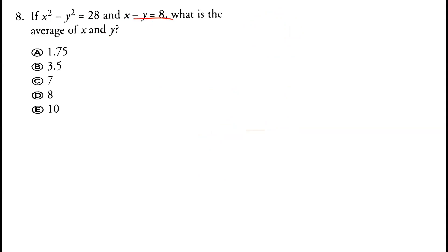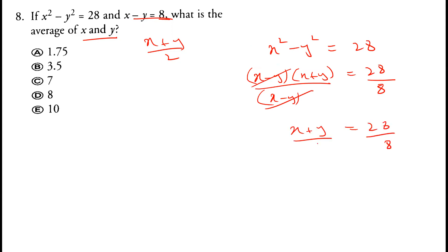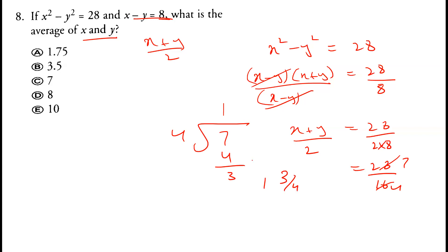If x squared minus y squared equals 28 and x minus y equals 8, what is the average of x and y? We write x squared minus y squared as (x minus y)(x plus y) equals 28. Dividing by x minus y which is 8, x plus y equals 28 over 8. Dividing by 2, the average is 28 over 16, which is 7 over 4, or 1.75. Option A is correct.